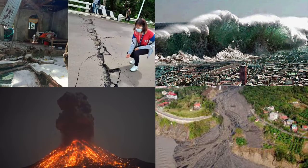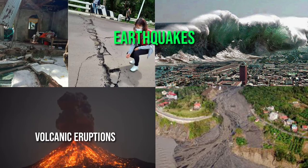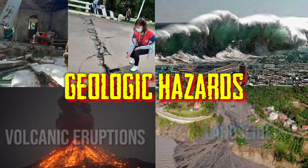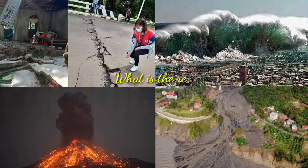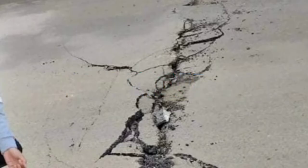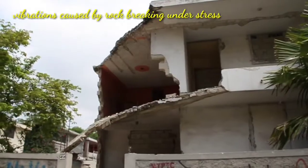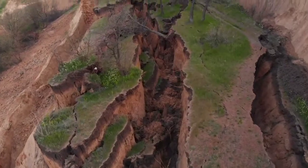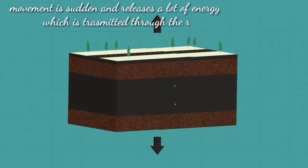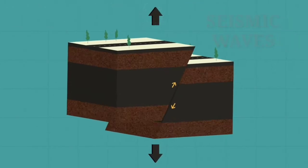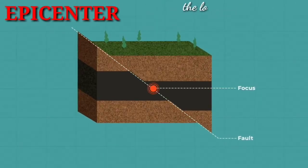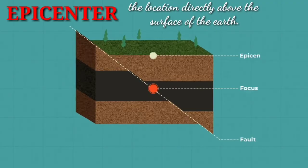Everyone is aware that natural disasters like earthquakes, volcanic eruptions, and landslides can bring hazards to an entire community and even to the entire nation. Let's start with earthquakes. Earthquakes are vibrations caused by rock breaking under stress. This vibration travels and reaches the surface of the earth. This movement is sudden and releases a lot of energy which is transmitted through rocks as seismic waves. The point where an earthquake originates underground is called the focus.